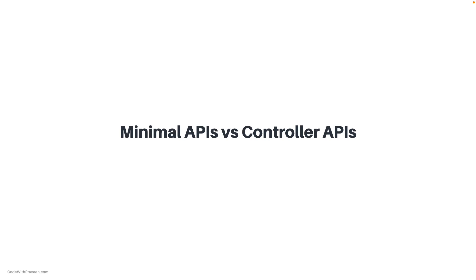In this lecture, let us understand the differences between minimal APIs and controller APIs. Controller APIs are also referred to as MVC APIs, denoting the existing web API implementation supported in .NET Core. The minimal API refers to the new set of technologies exposed in .NET Core starting from .NET 6.